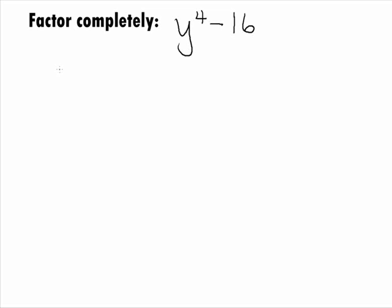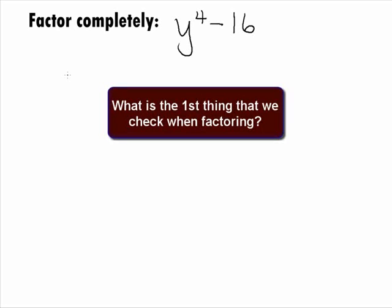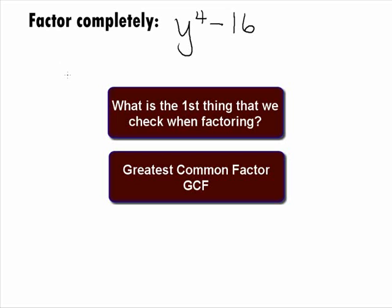In this example, we want to factor the binomial y to the 4th power minus 16. What is the first thing that we always check for when we factor? The greatest common factor. In this case, there is not one.